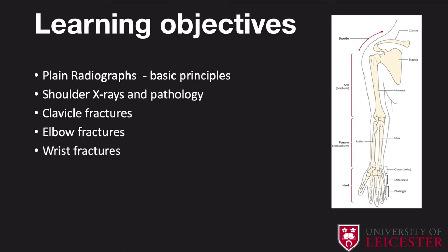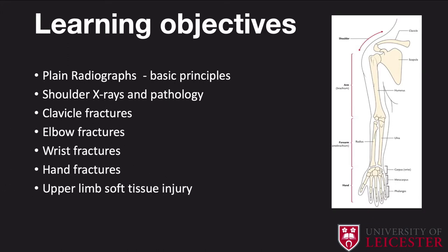The aim of today is to cover a structured approach of assessing a radiograph in the different positions or anatomical locations within the upper arm. We'll start off systematically with the shoulder, moving up to the clavicle and then working down the upper arm, ending with the distal phalanges. We'll also focus on soft tissue injury and pathology that you may encounter on radiographs.